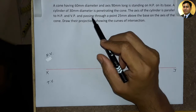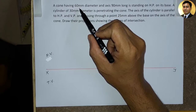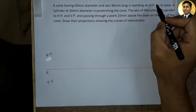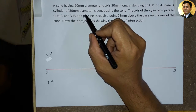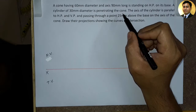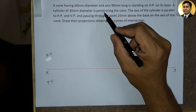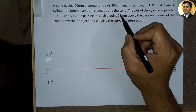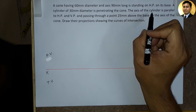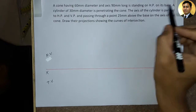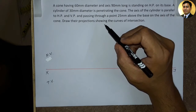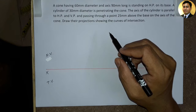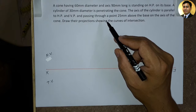Data mein bataya gaya hai ki ek cone hai jis ka base diameter 60 mm hai aur axis height 90 mm hai, woh apne base per horizontal plane per rest ho raha hai. Aur is cone ko 30 mm diameter ka cylinder penetrate kar raha hai. Cone ki axis aur cylinder ki axis ka intersecting point, cone ke base se 25 mm upar se pass ho raha hai. Cylinder ki axis horizontal plane aur vertical plane se parallel ho kar pass ho raha hai. Is condition ko leke hume intersection aur penetration ka problem solve karna hai. Hum assume karenge ki object first quadrant mein rest ho raha hai.